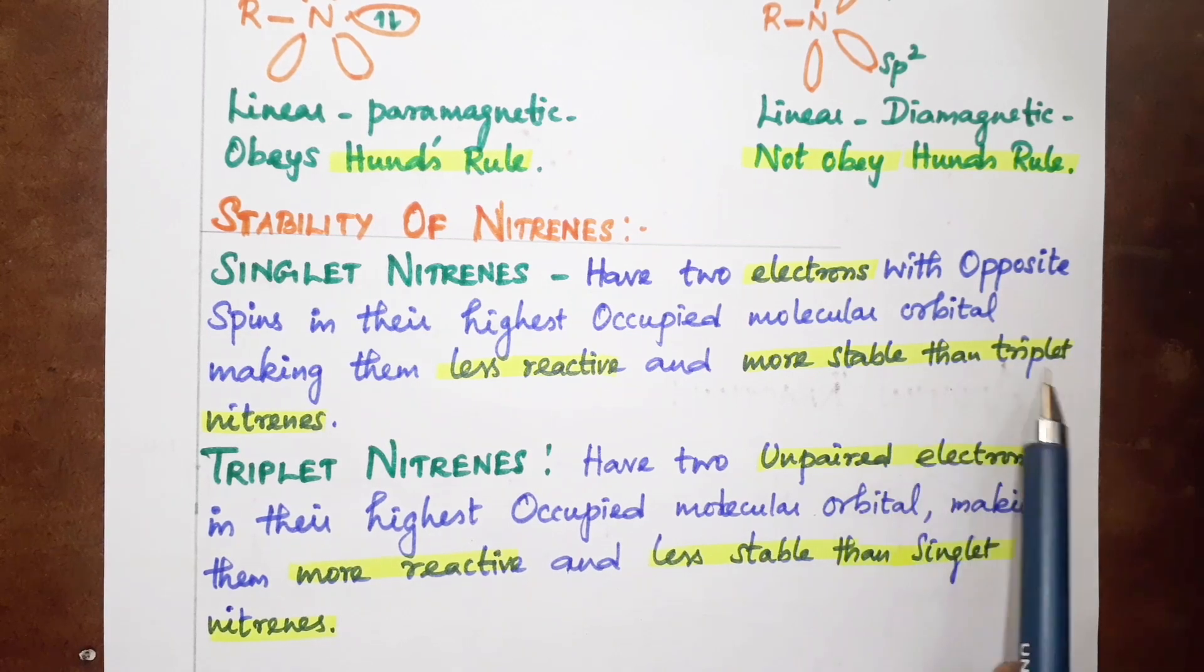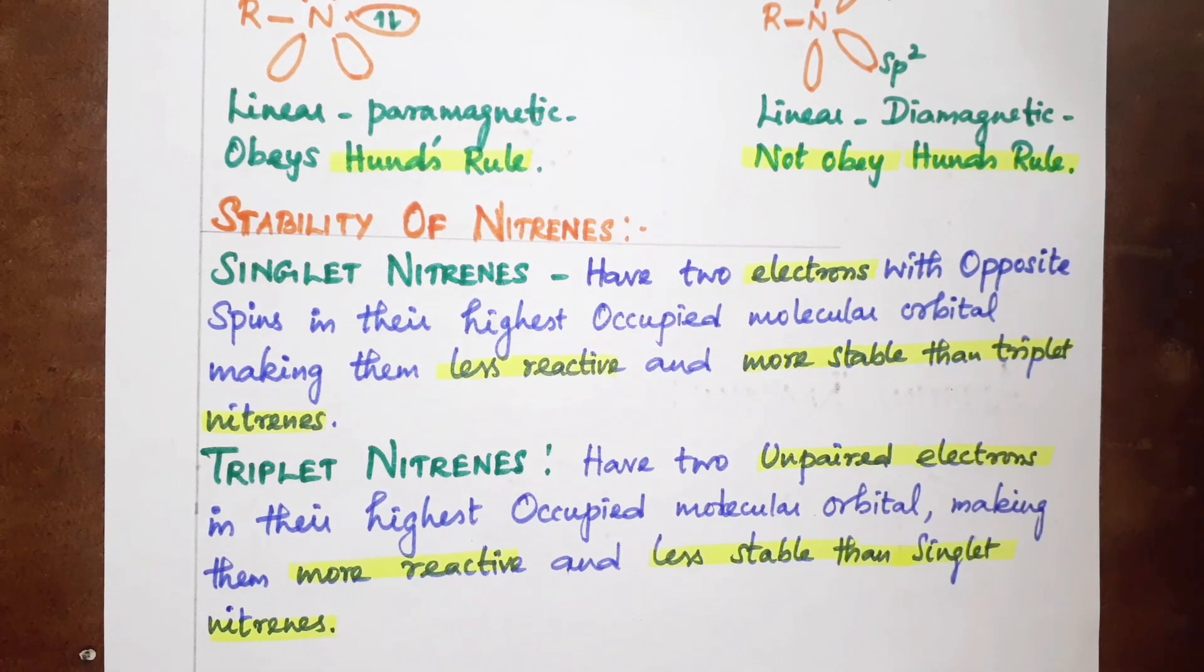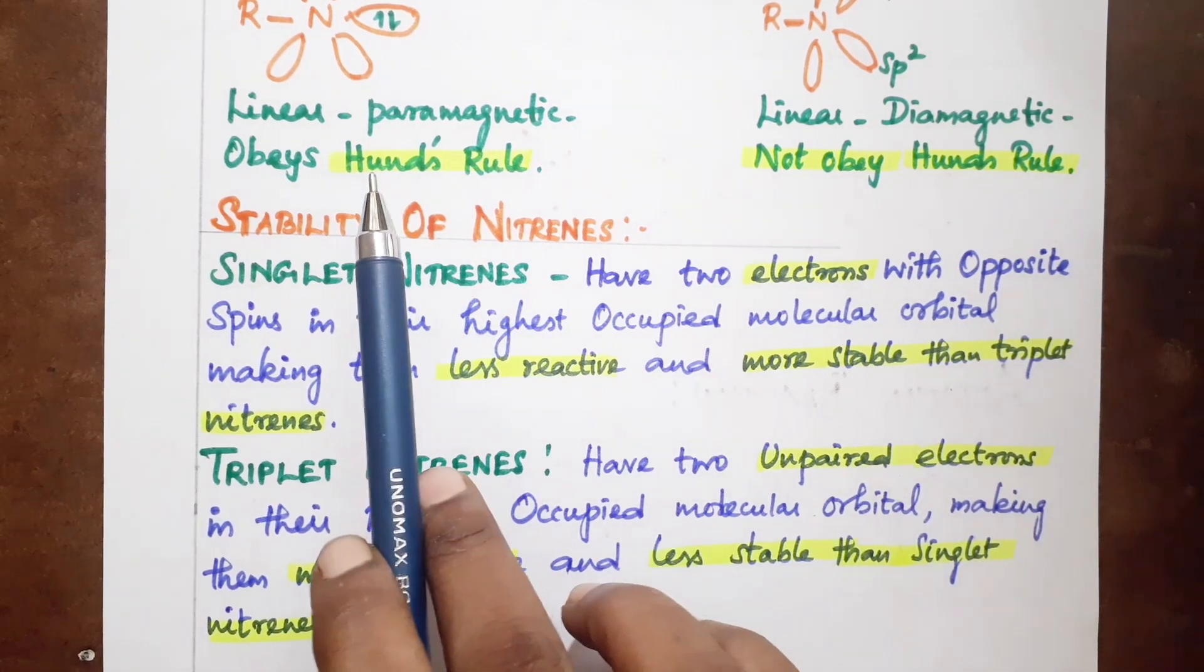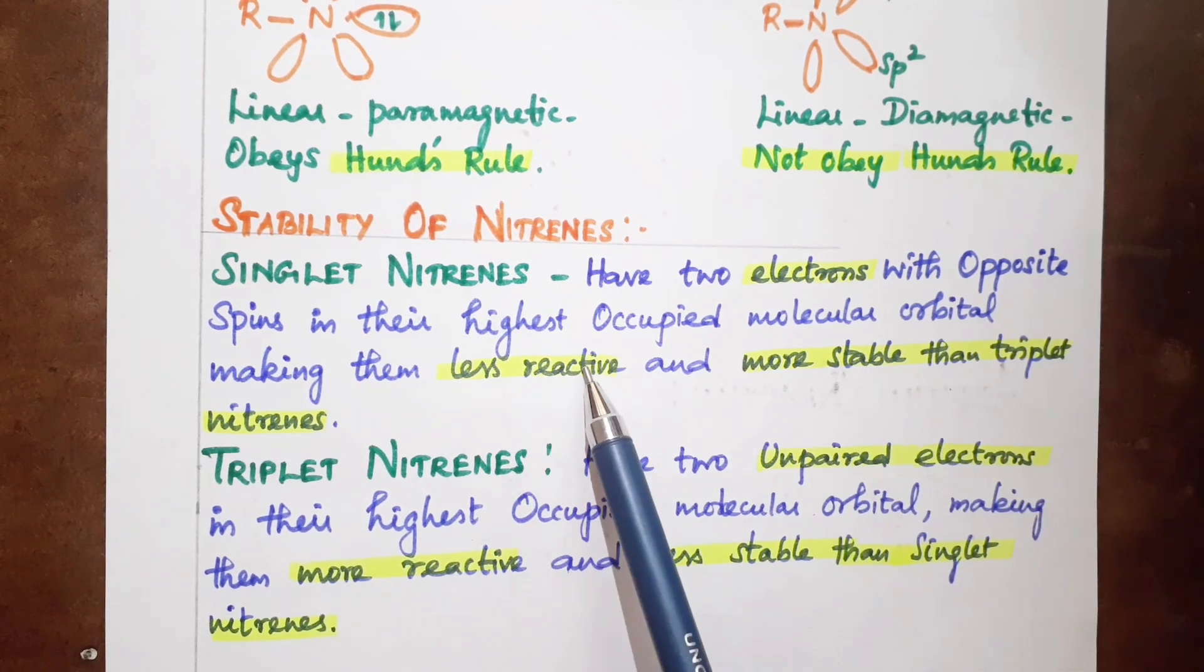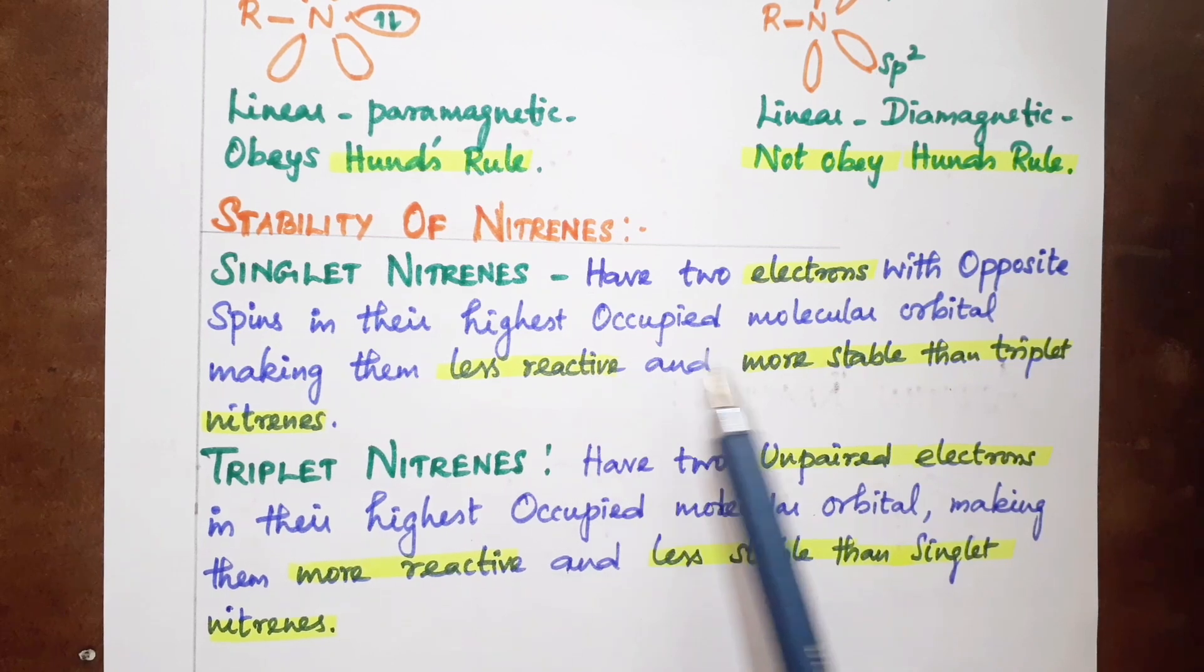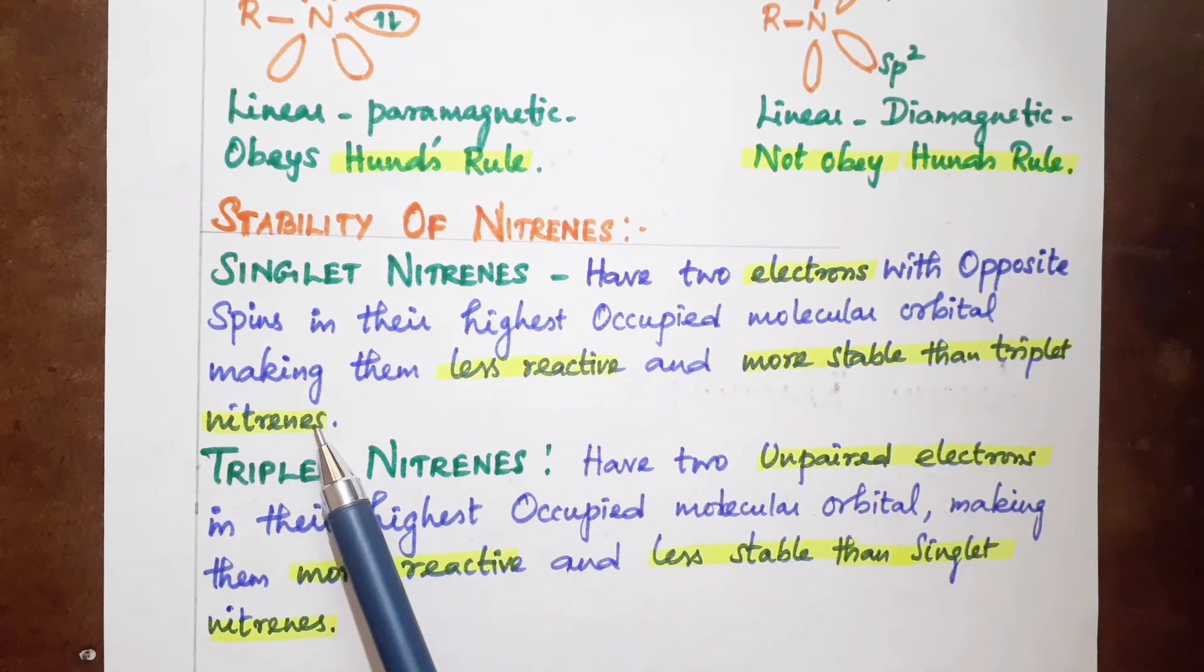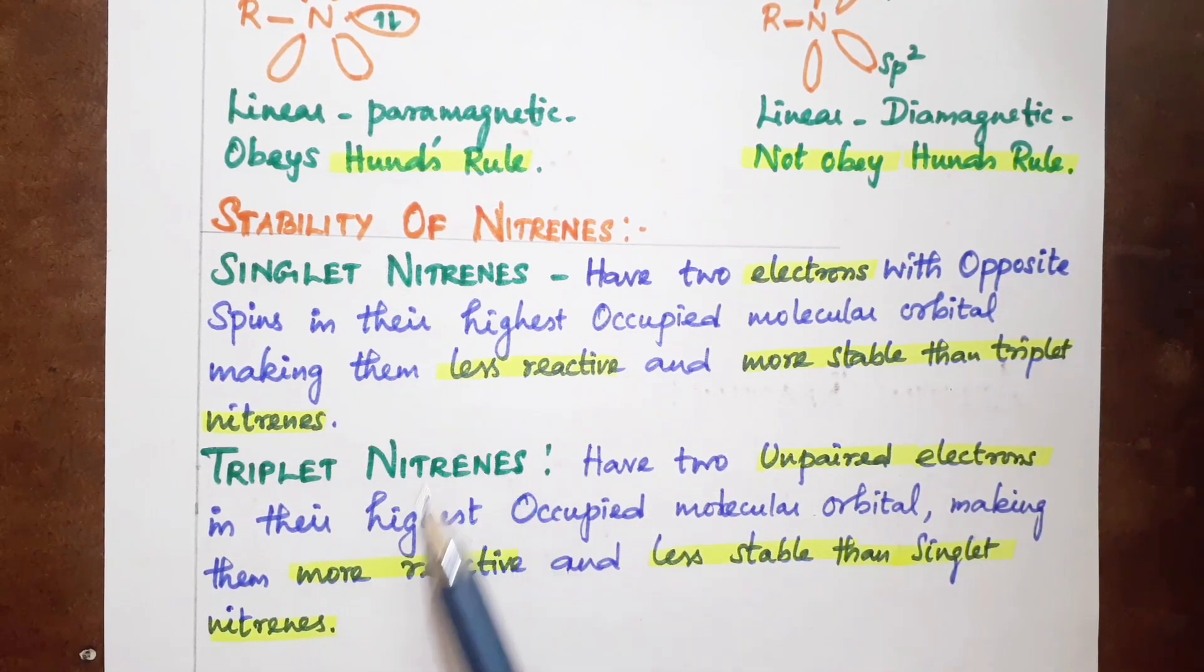Triplet nitrenes have two unpaired electrons in their highest occupied molecular orbital, making them more reactive and less stable than singlet nitrenes.